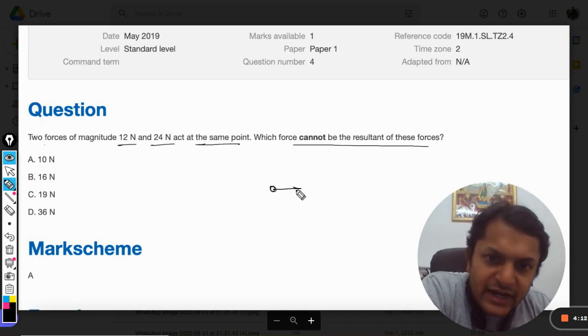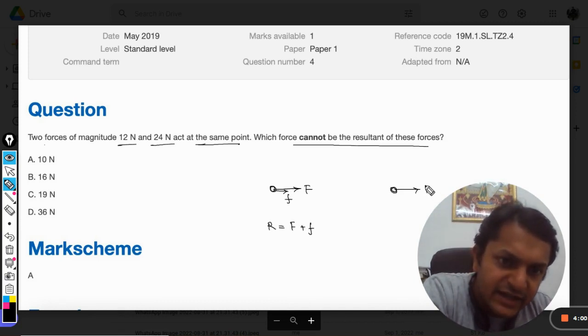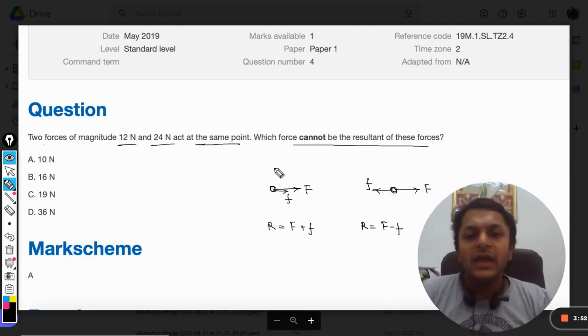Case number one is that both of the forces are acting in the same direction. So the resultant will be given by F plus F. And if we talk about another case when F is acting in the forward direction and this force is acting in the backward direction, the resultant will be F minus F.